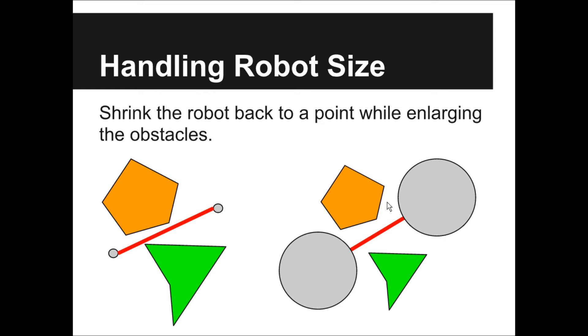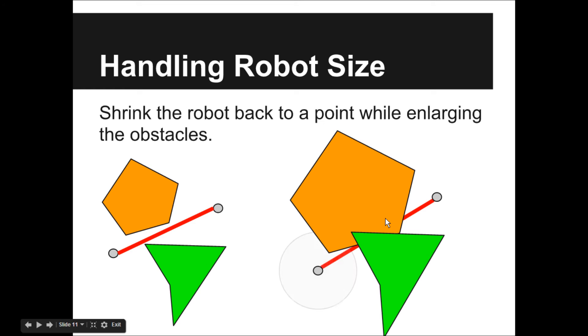So the red line is a feasible path. However, for the big one, the two obstacles overlap after enlargement. As a result, the red line is blocked, which indicates it is not feasible.